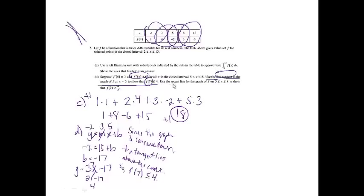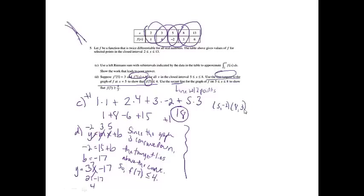Now we do the same thing with the second sentence — use the secant line to show that f of 7 is greater than or equal to 4 thirds. A secant line is just a line through two points. Since they told me 5 to 8, my two points are (5, negative 2) and (8, 3) from the chart. The slope is 3 minus negative 2 over 8 minus 5, giving 5 over 3. My slope is 5 thirds.